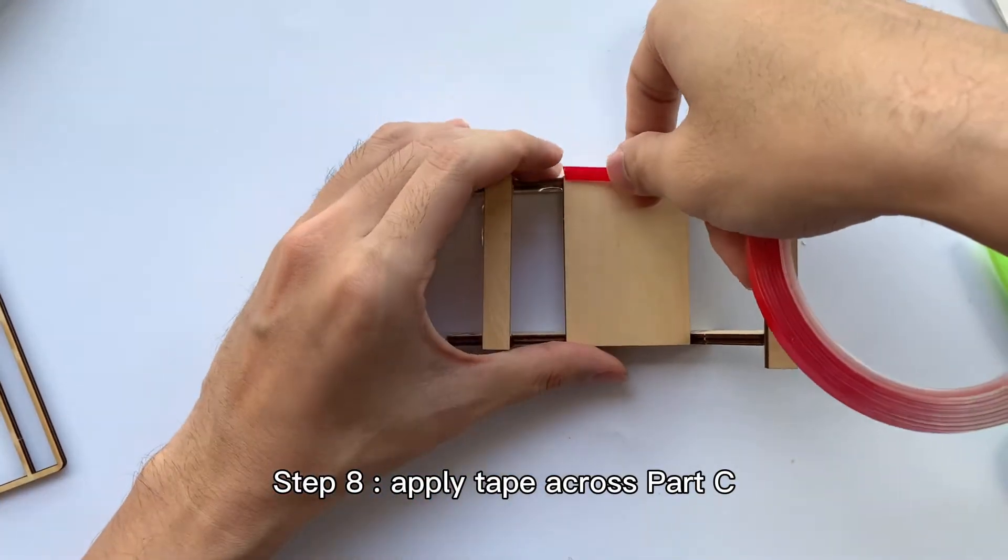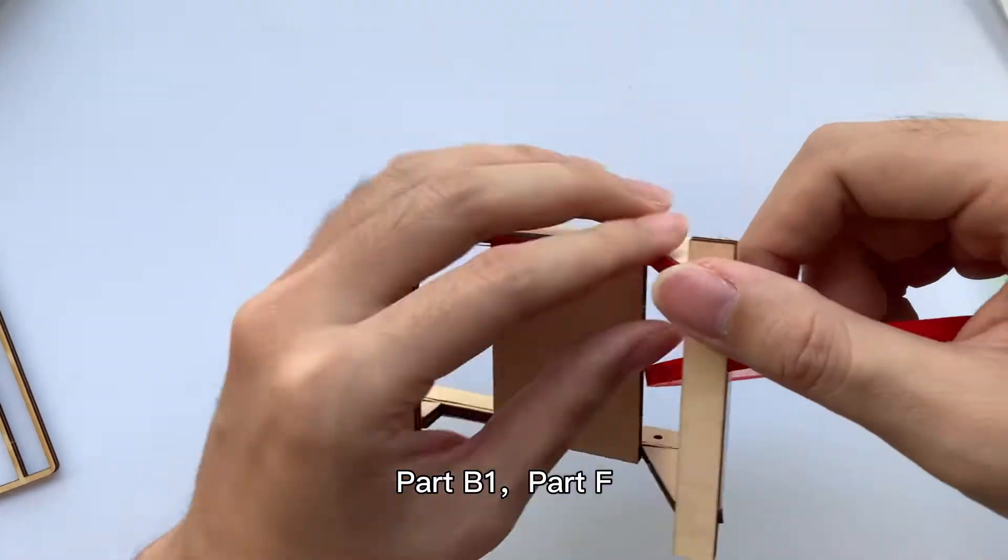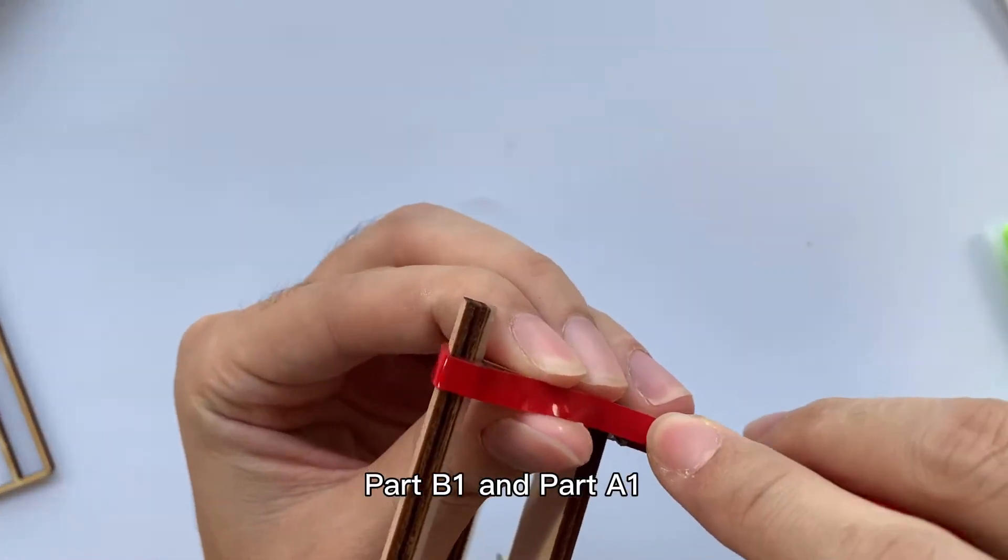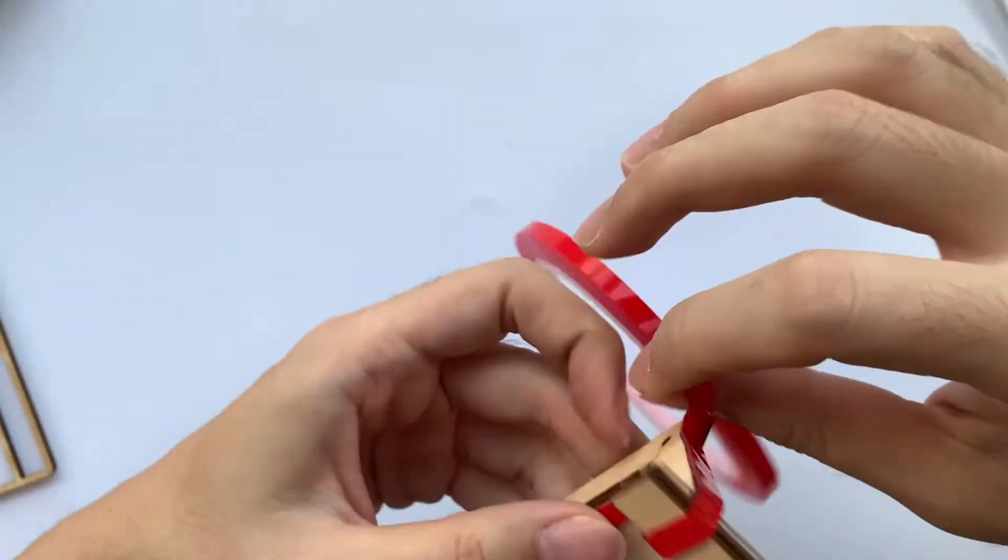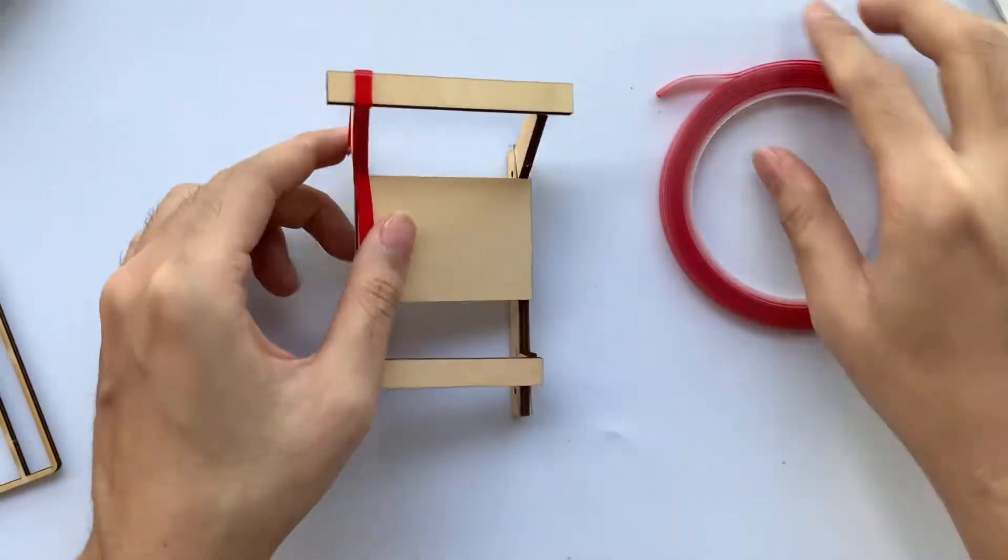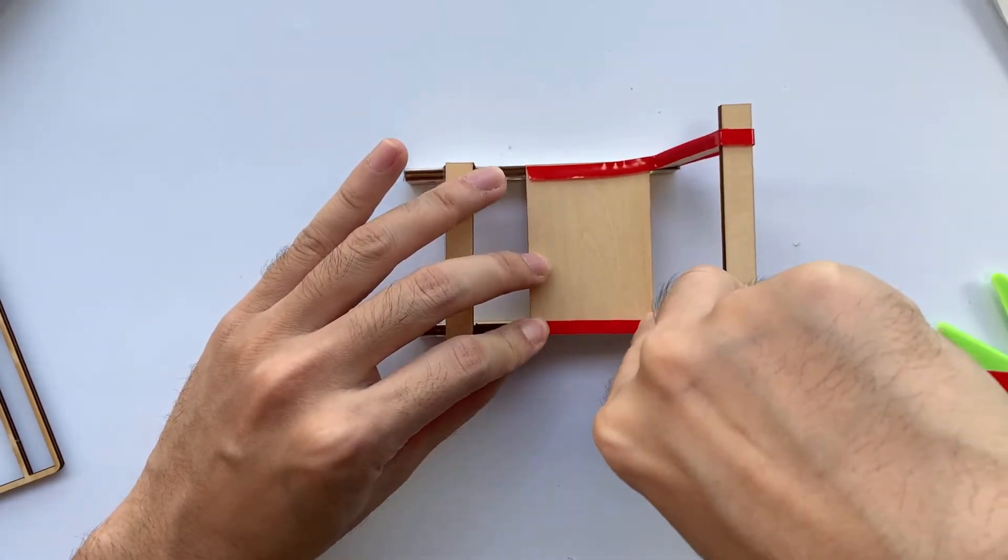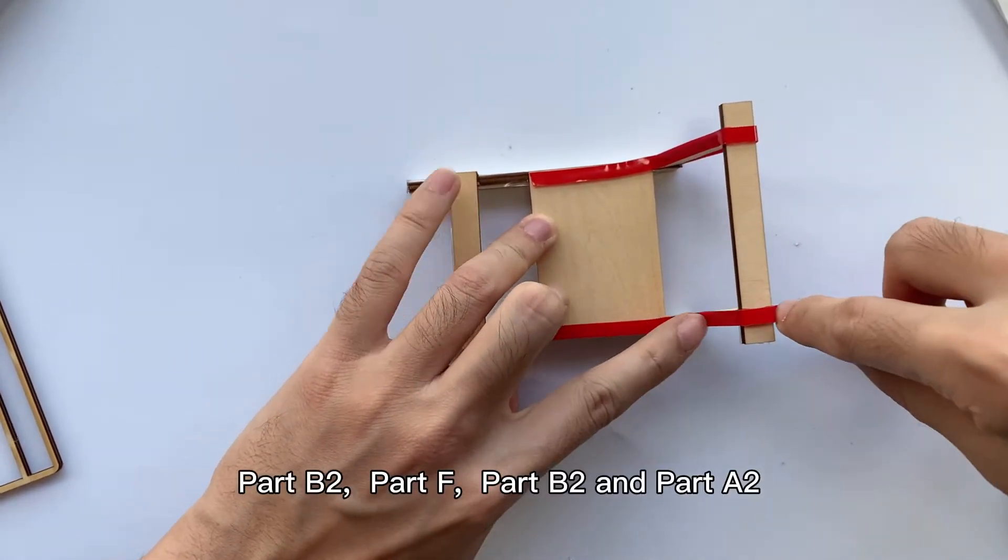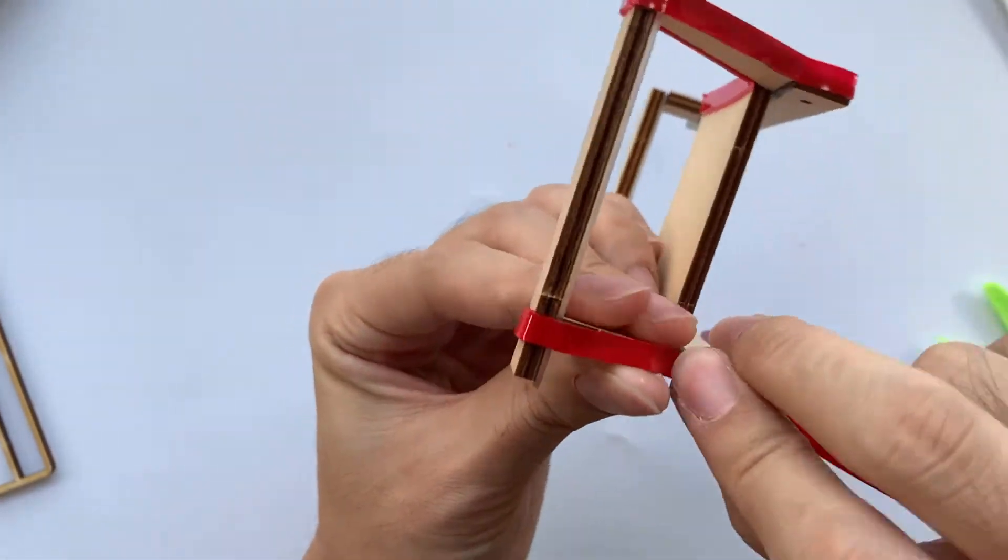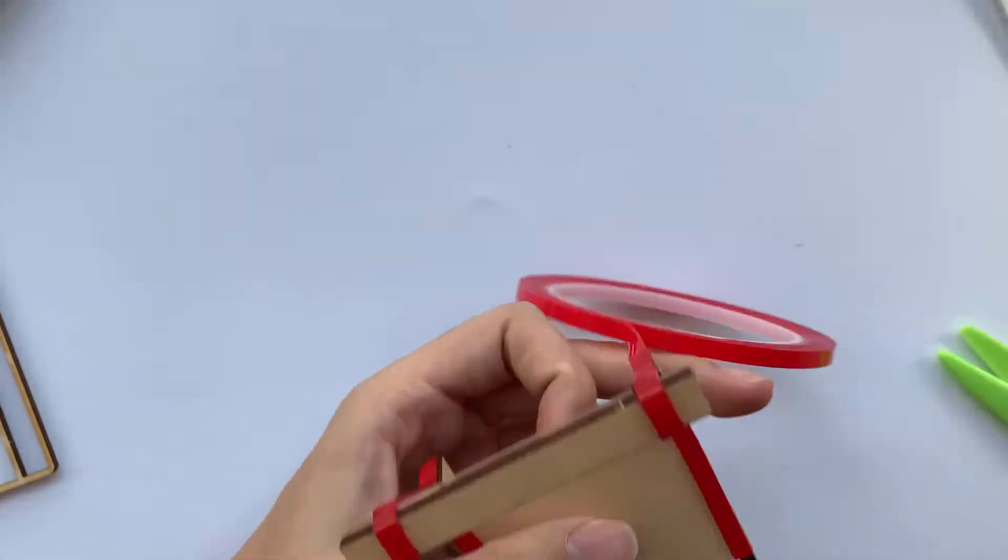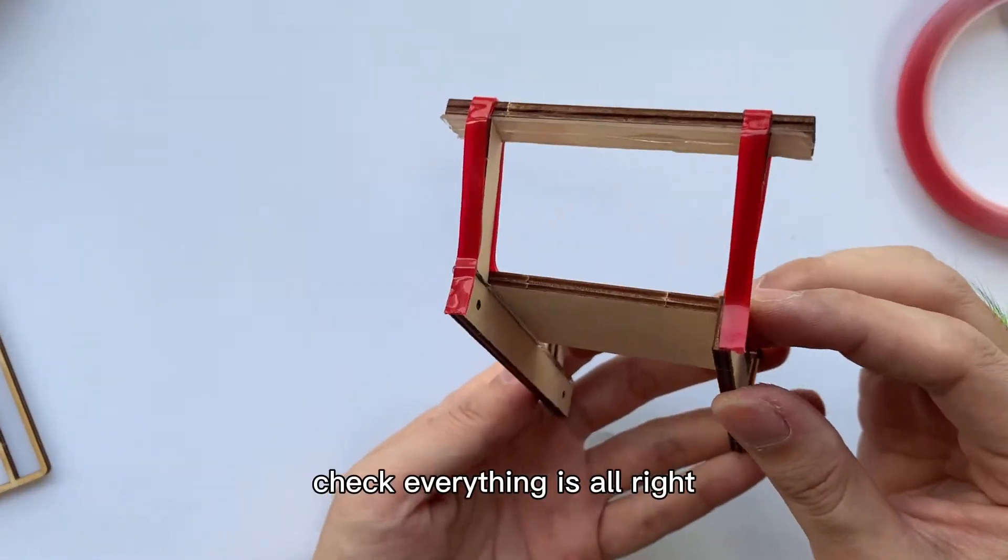Step 8: Apply tape across part C, part B1, part F, part B1, and part A1. And the same step on the other side: apply tape across part C, part B2, part F, part B2, and part A2. Use the scissors to cut. Perfect. Check everything is alright.